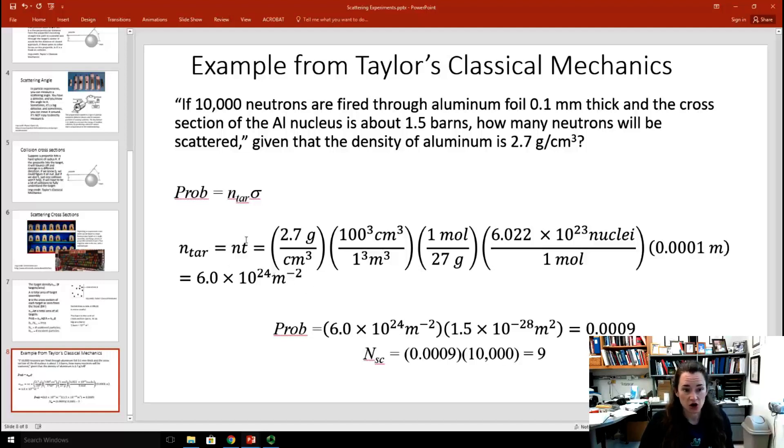That gives us n-tar, and we multiply n-tar times sigma in order to get the probability. So, that's 6 times 10 to the 24th times 1.5 times 10 to the minus 28th, which was the cross section of the aluminum nucleus. That gives us probability of .0009.